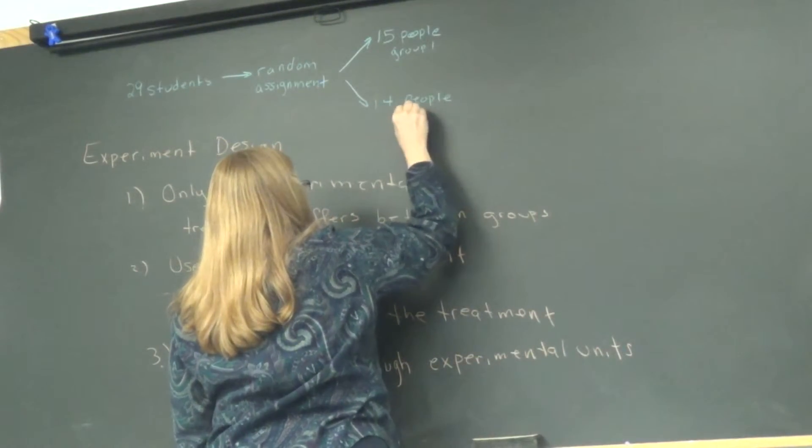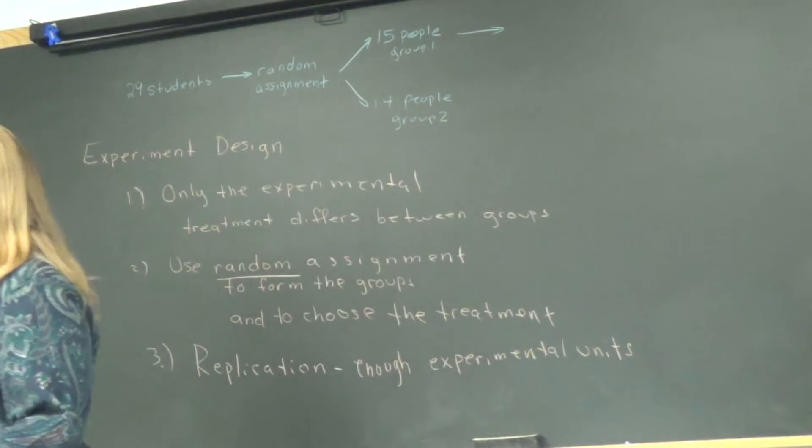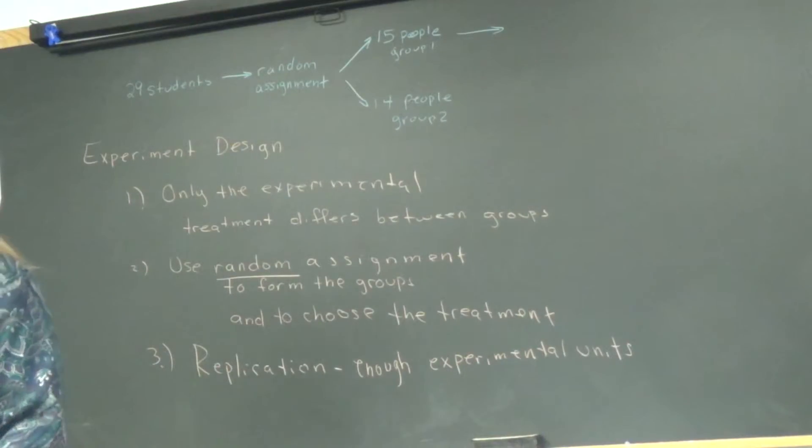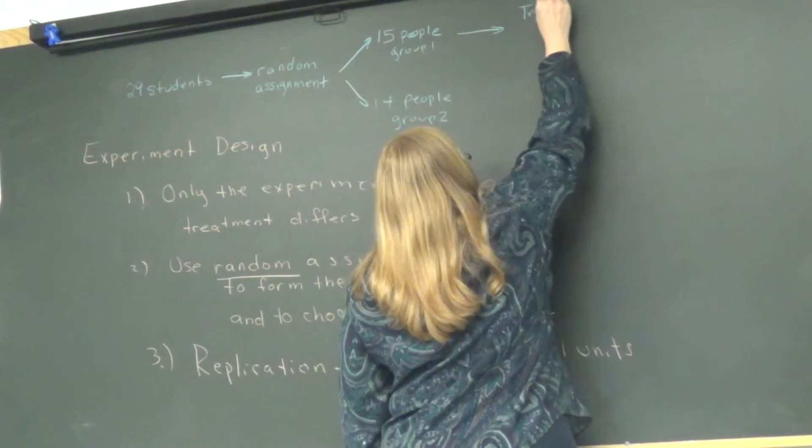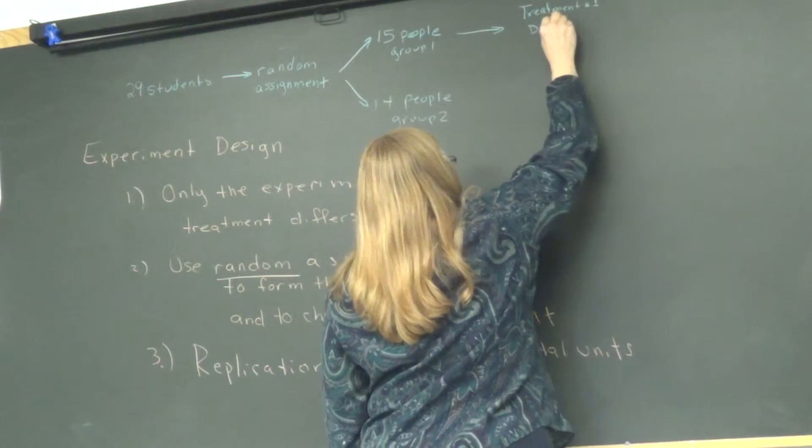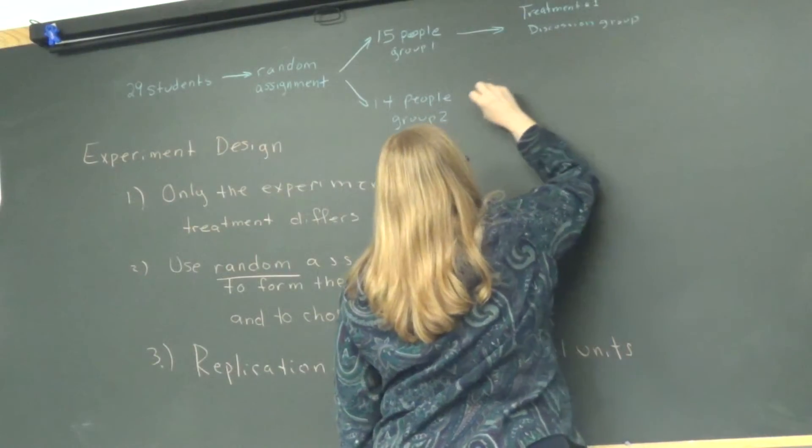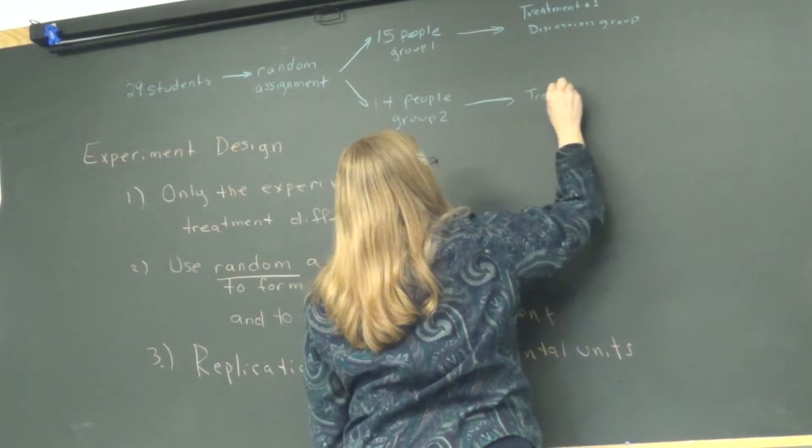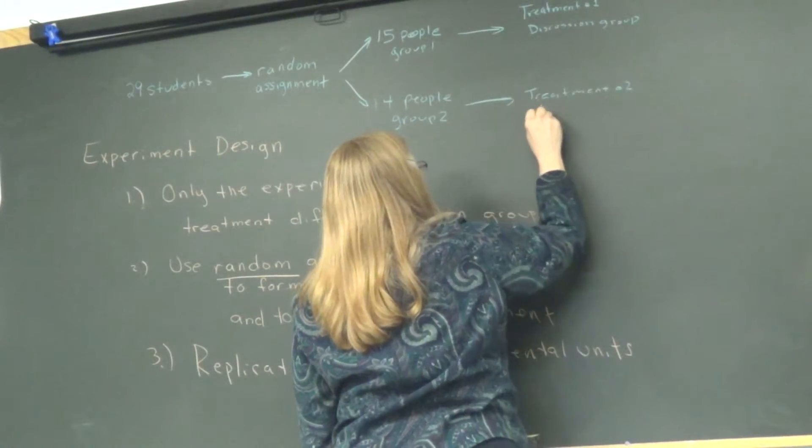Group two. All right. So then Allie, what do you do with the first group? You have them with a small discussion group and video. Okay. So we call that treatment one. Discussion group. Treatment number one. Discussion group. I'll just call it discussion group because the other one watched the video too. And treatment number two, then what would I say? Just video. Just video. Right.